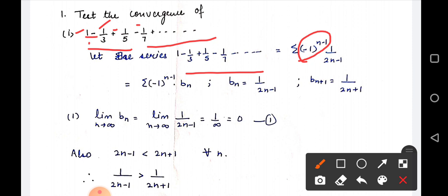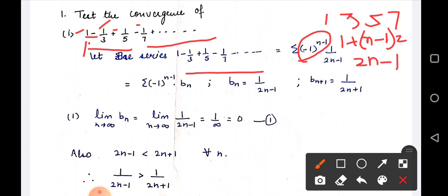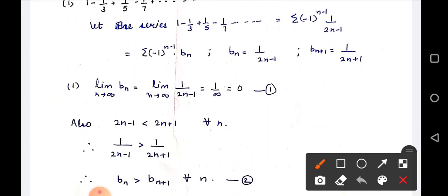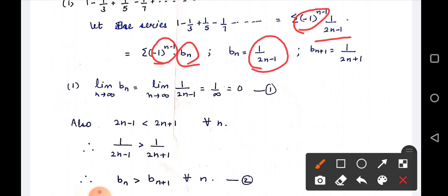If you see the terms in the denominator: 1, 3, 5, 7 — this is an AP with common difference 2. So the nth term is given by 1 + (n-1)×2 = 2n-1. So the series An = (-1)^(n-1) × 1/(2n-1). We take bn = 1/(2n-1), so bn+1 = 1/(2n+1).